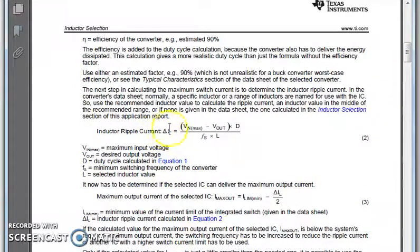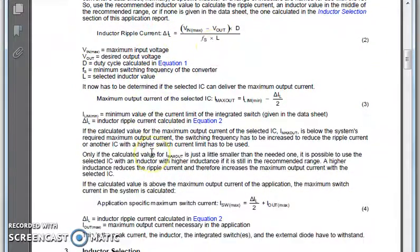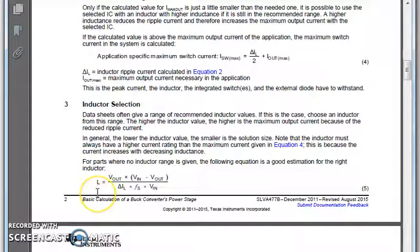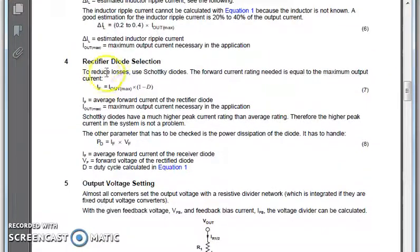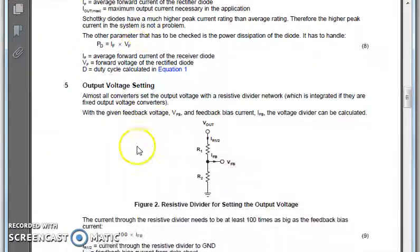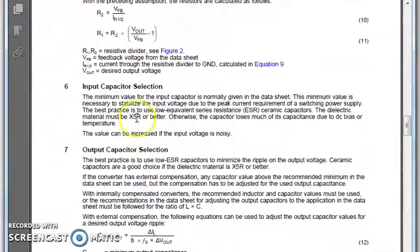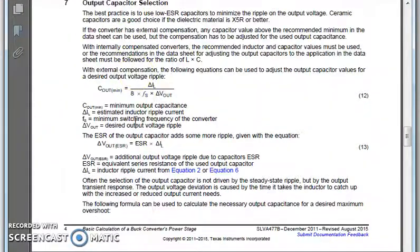The ripple current that we have calculated is the same thing over here. And the inductor selection, the same formula that we have used. It is V out times V in minus V out divided by del IL times Fs times V in. The only difference, we have used the time period T over here. Here, it is the switching frequency Fs. Then, we have equations for rectifier diode selection, output voltage sensing, input capacitor selection and output capacitor selection. This completes the theoretical analysis of a buck converter. Thank you for watching.